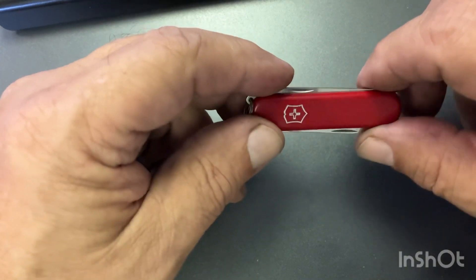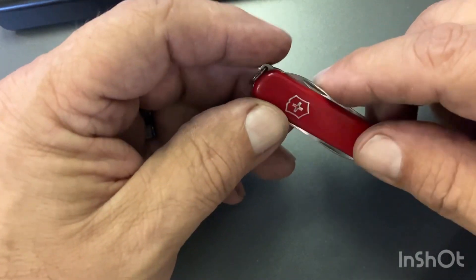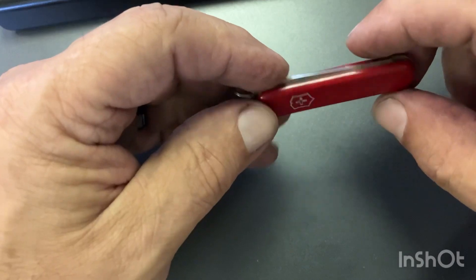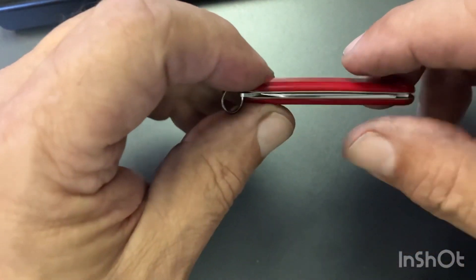Today we got a real simple Victorinox Swiss army knife. This is a 58 millimeter and this is called the Escort.